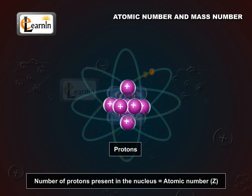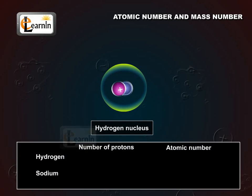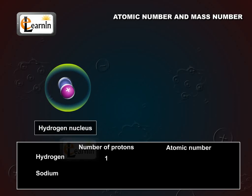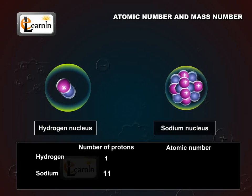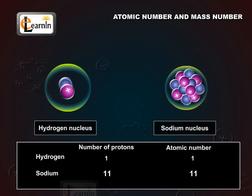The number of protons present in the nucleus is equal to the atomic number given by capital Z. For example, the number of protons in the hydrogen nucleus is 1. In a sodium atom, it is 11. Therefore, their atomic numbers are 1 and 11 respectively.